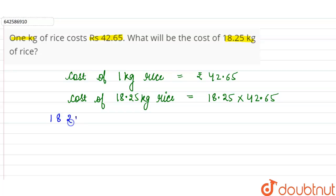This is equal to 18.25 and 42.65. So 5 into 5 is 25, 2 to carry. 5 into 2 is 10 plus 1 plus 2 is 13, 1 to carry. 5 into 8 is 40 plus 1 is 41. 5 into 1 is 5 plus 4 is 9.